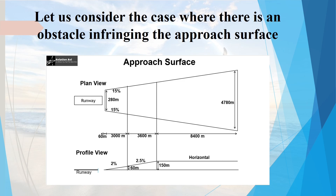In this video, we will consider the case when there is an obstacle infringing the approach surface, present at a particular distance from the threshold, because of which we have to displace the threshold to continue operations on the runway. Before we get into the calculations, we must understand what the approach surface is and its dimensions. Looking at the plan view, this surface starts at a distance of 60 meters from the runway threshold. The width of the inner edge is 280 meters, which is that of the runway strip, and it has a divergence of 15 percent.